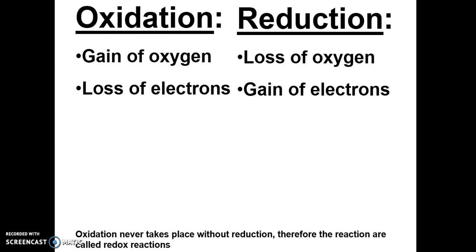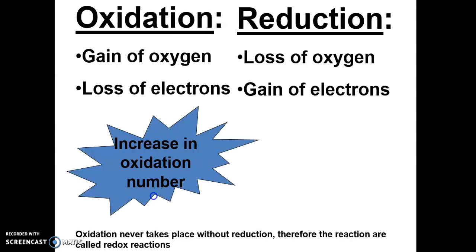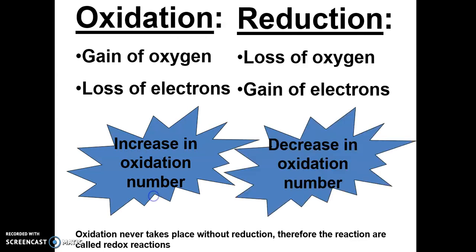There is also one more way to know whether your substance is going through oxidation or reduction, which is by calculating the oxidation number. If the substance gains oxidation number from reactant to product, it is going through oxidation. Meanwhile, if the substance decreases in oxidation number, it is going through reduction.